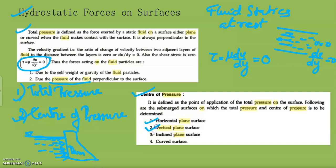The types of surfaces we deal with are: horizontal plane surface, vertical plane surface, inclined plane surface, and curved plane surface. For each of these surfaces encountered in water-related structures, we have to calculate the total pressure and center of pressure. We will start with the vertical plane surface.